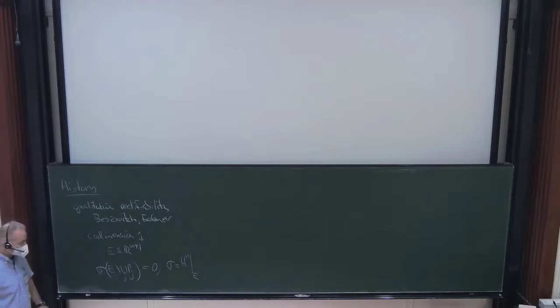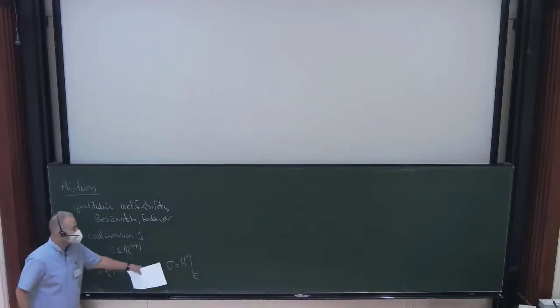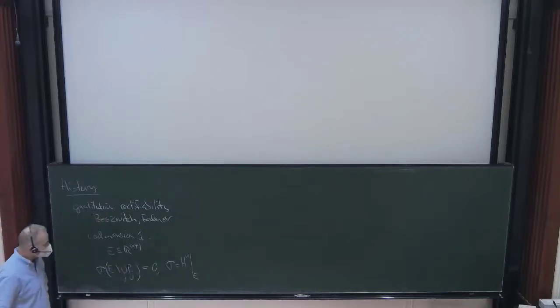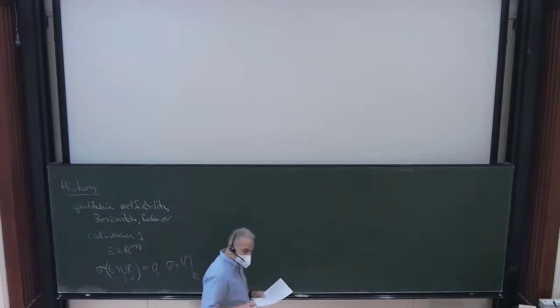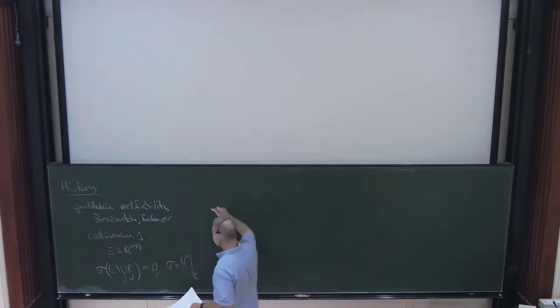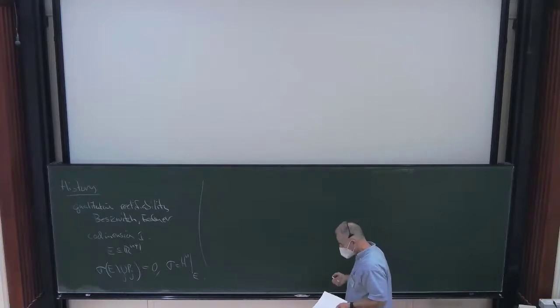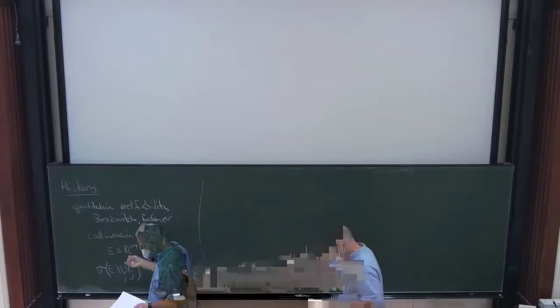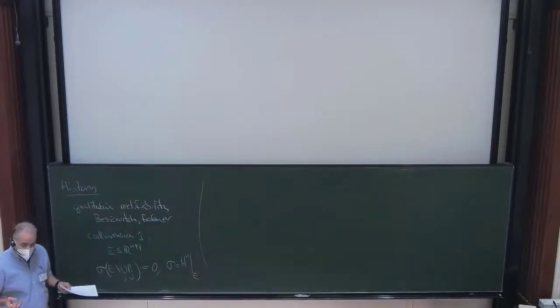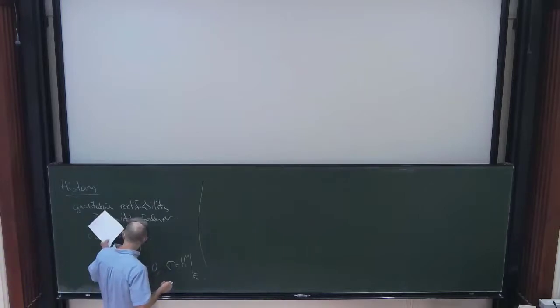Sigma here is going to be Hausdorff H^n measure restricted to E. In an elliptic setting, this is always going to be what sigma will be. We have to tweak this a little bit in the parabolic world because the difference in homogeneity. Of course, this is a qualitative property. It's a qualitative situation geometrically. And therefore, when you tie this, which you can do, to various harmonic analysis properties, those are also going to be qualitative.